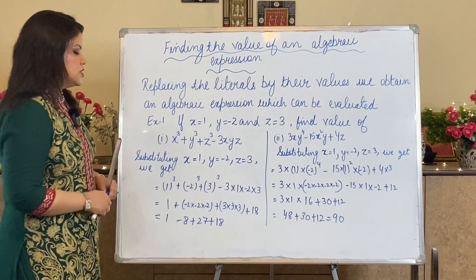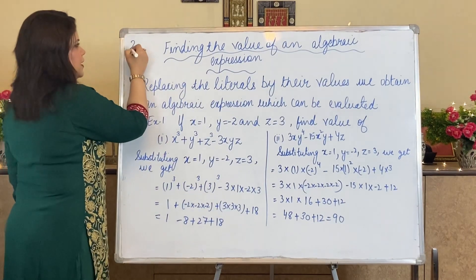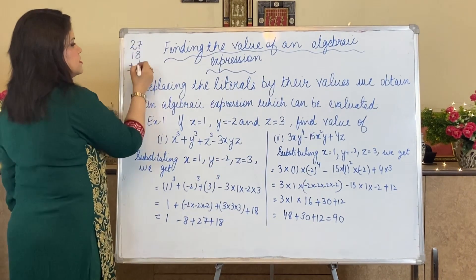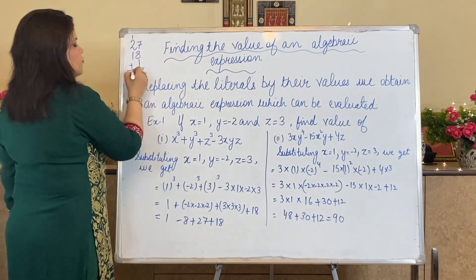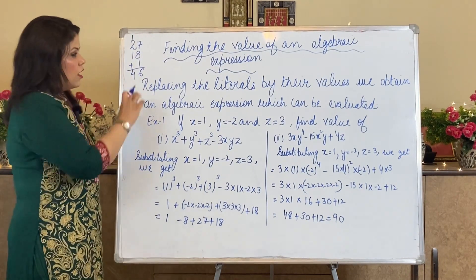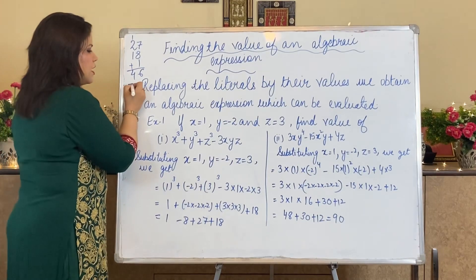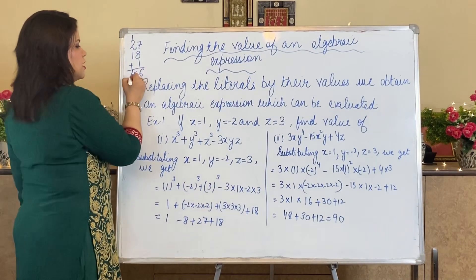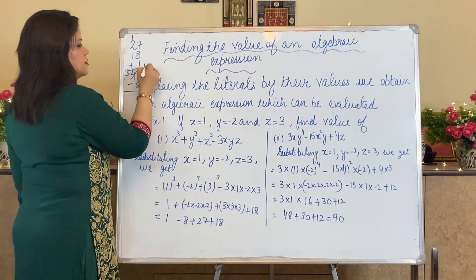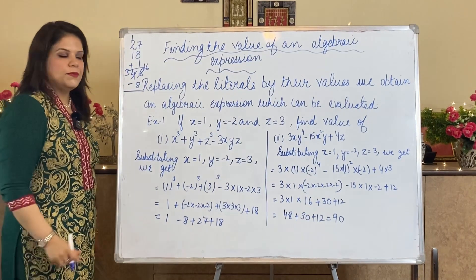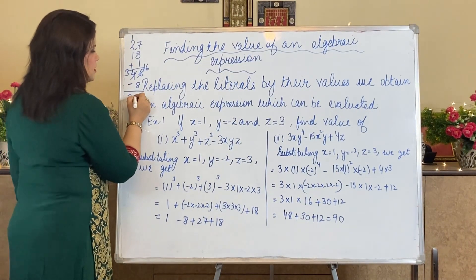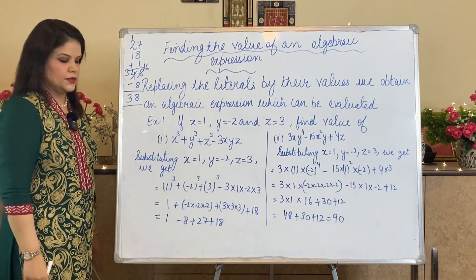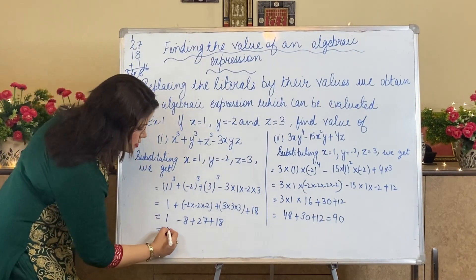Now adding all the positive terms: 1 + 27 + 18 = 46. Then subtracting 8 from it: 46 - 8 = 38. Since the negative value is smaller than the positive, the sign of the positive will come. So the value of this algebraic expression is 38.